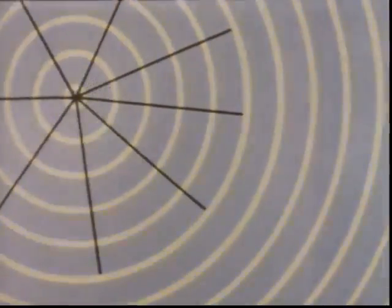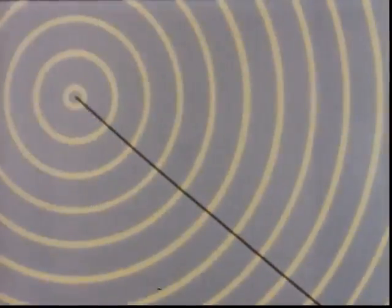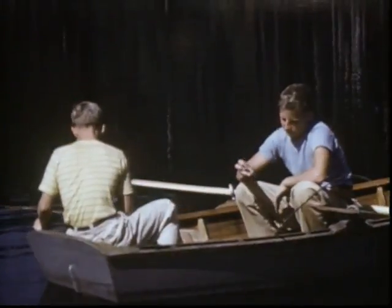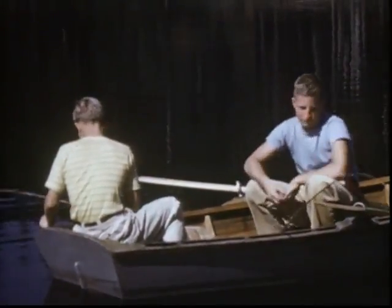Light waves radiate in all directions in straight lines, sometimes called rays. However, it is easier to study light in terms of a single ray. Just as a stone skips off water, light rays bounce. This is called reflection.